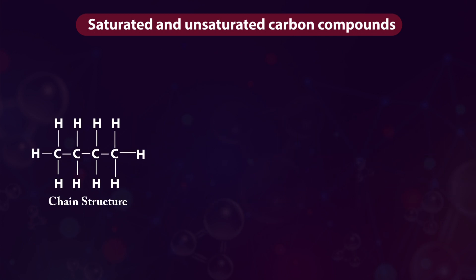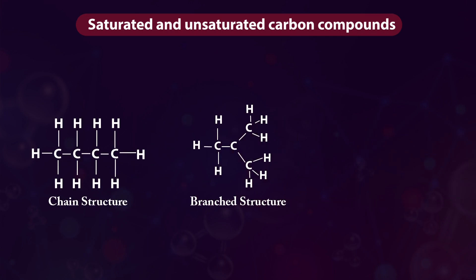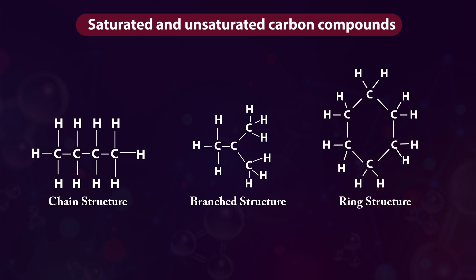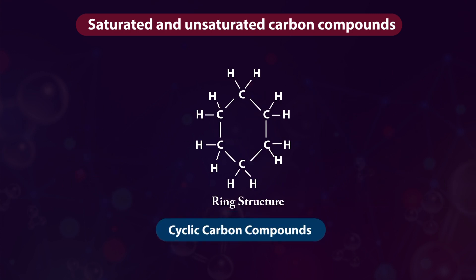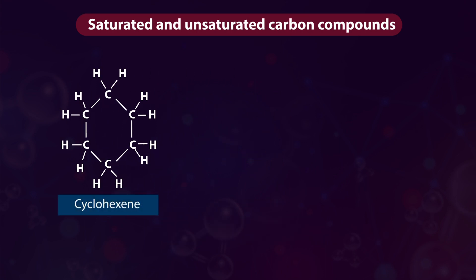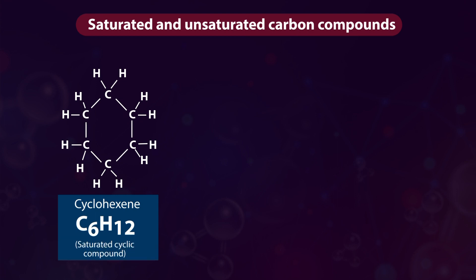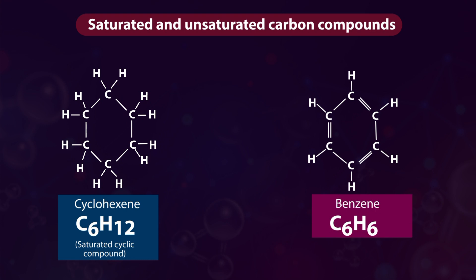In addition to straight chain and branched chain structures, some carbon compounds form ring structures — these are called cyclic carbon compounds. For example, cyclohexane C6H12 is a saturated cyclic compound, and benzene C6H6 is an unsaturated cyclic carbon compound.